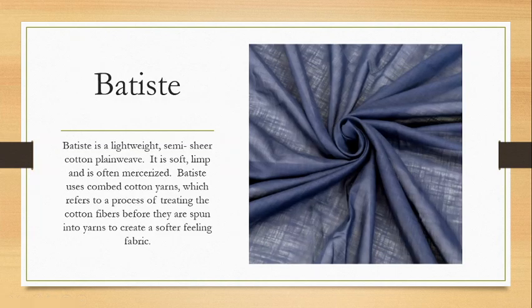Our first sheer fabric is Batiste. Batiste is a light, semi-sheer cotton plain weave. It's typically soft and limp, and often mercerized for an added luster. Batiste almost always uses combed cotton yarns — a process of treating cotton fibers before they're spun into yarns, creating a softer-feeling fabric. We see combed cotton yarns a lot in bedding and fabric where a nice, soft, flowing feel is desired.